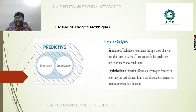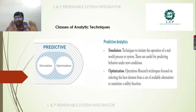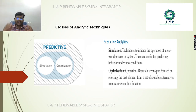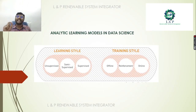Predictive analytics includes Simulation and Optimization. Simulation is a technique that emulates real-world operations inside software before they happen — for example, MATLAB PV systems are simple examples of simulation. Optimization is an operations research technique focused on selecting the best element from a set of available alternatives to maximize a utility function.